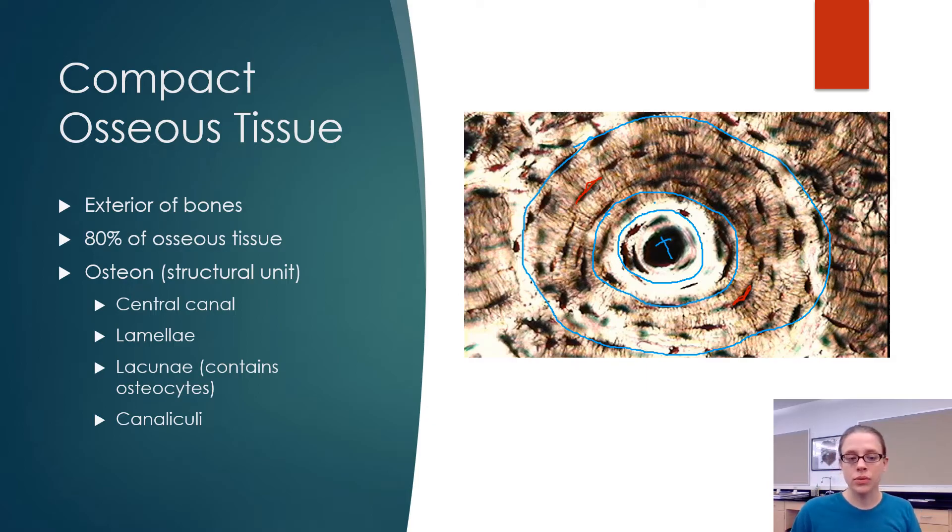Now in between the lacunae we have canaliculi which are the little black lines radiating out from the center, radiating out from the central canal. All of these tiny little black lines coming out from the center, those are all canaliculi. The root word there is canal. The canaliculi are little passageways that are connecting the lacunae to each other and to the central canal to allow nutrients and other material to pass between them.